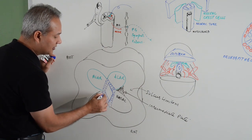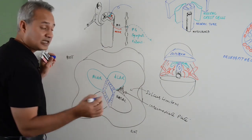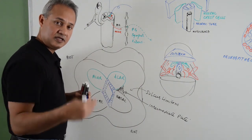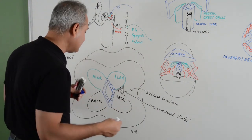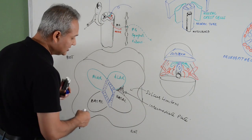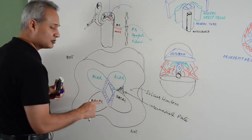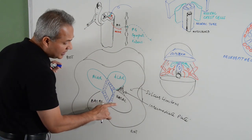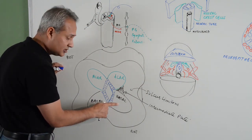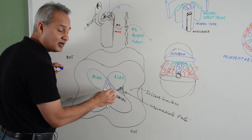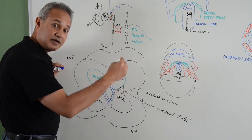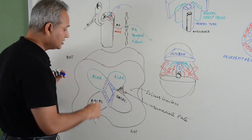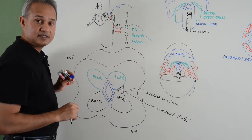That is one type of cell. Ependymal cells: their functions include lining the cavities, filtering CSF, and helping with the choroid plexus to secrete CSF. On the basal side are the motor neurons — the second type. Third type is the intermediolateral horn, which becomes the preganglionic sympathetic fibers. The fourth type is the sensory fibers. The important thing to remember about sensory fibers is that they come into the spinal cord from outside.